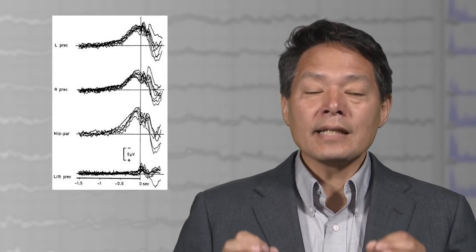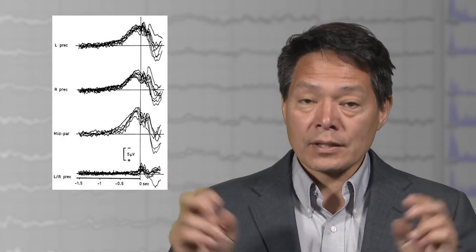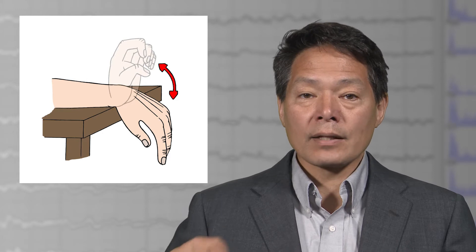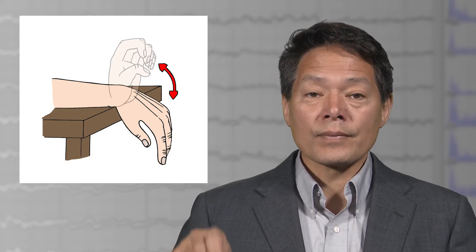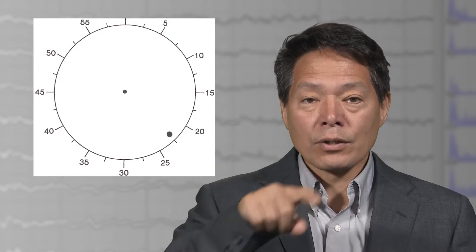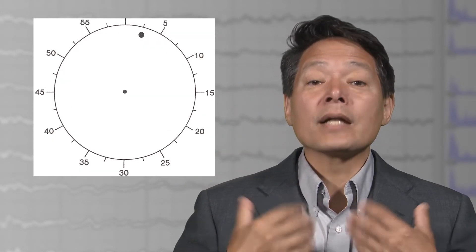So, in 1983, Benjamin Libet and colleagues reported that an event-related potential called the readiness potential precedes a volitional hand movement. Subjects were told to move their hand whenever they freely chose to do so. They also watched a rapidly rotating clock and were told to report the position of the clock when they first had an awareness of wanting to move.